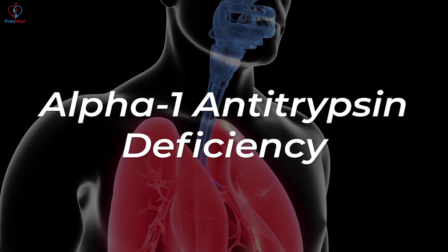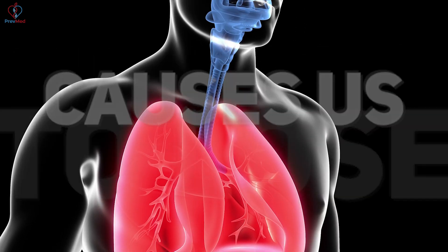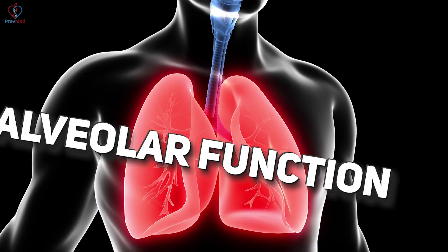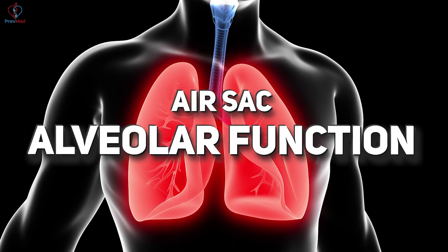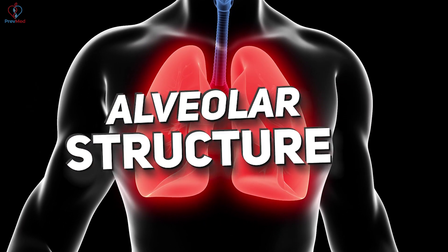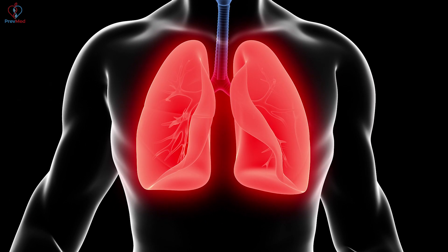Alpha-1 antitrypsin deficiency causes us to lose the air sac, the alveolar function, and the alveolar structure. How does it do that?